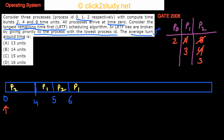P1 runs again for one time unit, leaving 2 units remaining. Then at time 7, P2 again has the longest remaining time and comes in once more. This alternating pattern of P2, P1, P2, P1, P2 continues. At time 8, all three processes have the same remaining time of 2 units each.